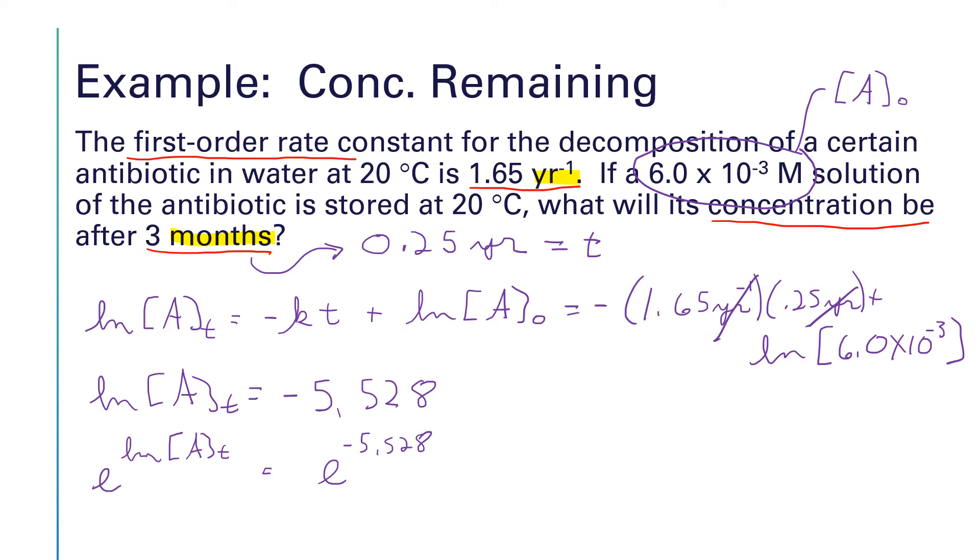Well, e to the natural log, those are opposite functions. They cancel out like multiplying and dividing cancel out. So that leaves me with just a sub t.